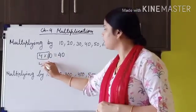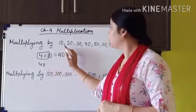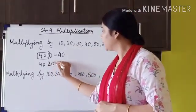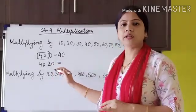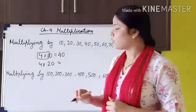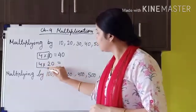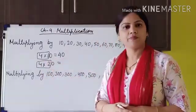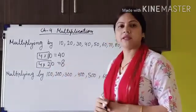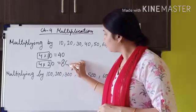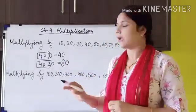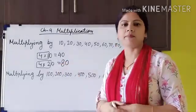Now taking the same number 4 and multiplying by 20. The shortcut is to only multiply 4 by 2: 4 twos are 8. Then put this 0 to the right of the product.